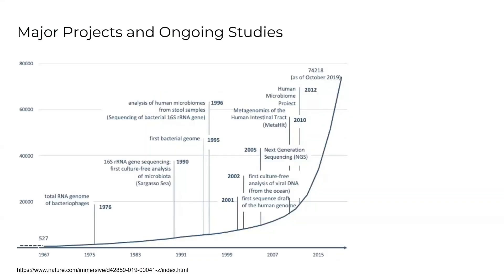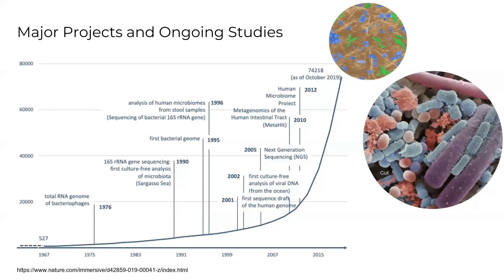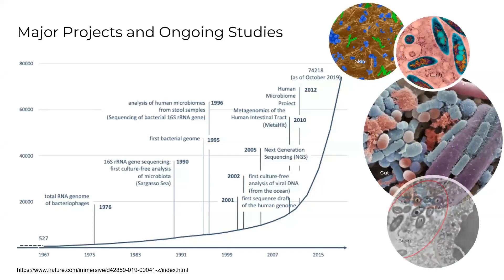Since the 1900s, microbiome studies have made significant progress, notably through initiatives like the Human Microbiome Project, enabled by metagenomic sequencing advances, allowing characterization of microbiota in various human organs and presenting opportunities and challenges in identifying their roles in organ health and disease.